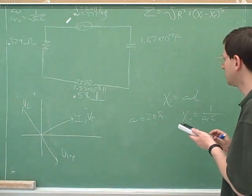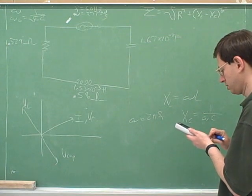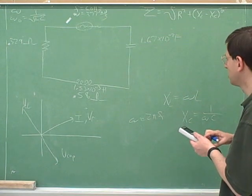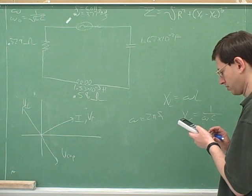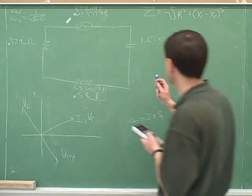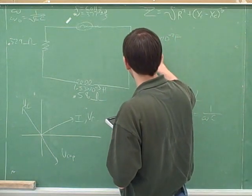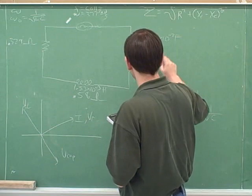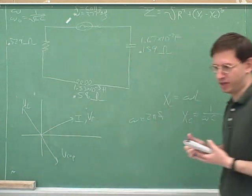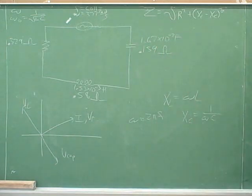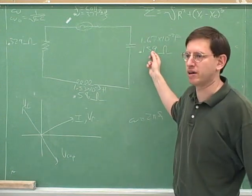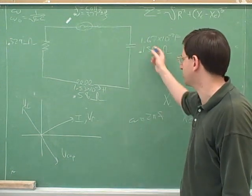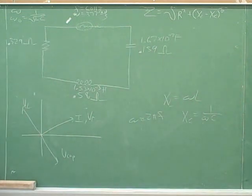The capacitive reactance XC comes out to 0.159 Ohms, which should again be in Ohms because this is like a resistance. We have to keep putting all our information in the right place in our picture — it's very important to make a nice big picture so we can put everything in the right place.